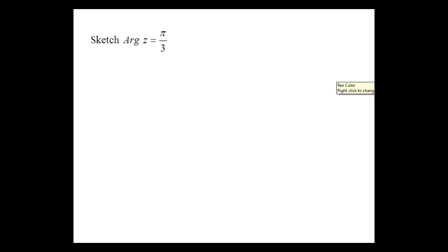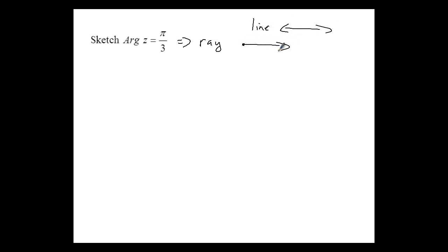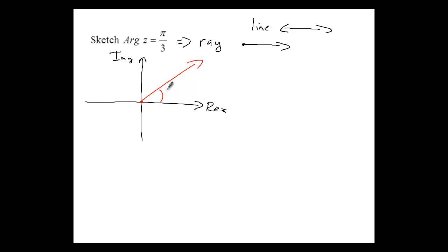Here's a different type of graph: this one says arg Z equals pi over three. This gives me a ray. A line goes in both directions continuously, but a ray has a starting point and goes in one direction only. This particular ray starts at the origin and goes at an angle of pi over three to the positive x-axis.